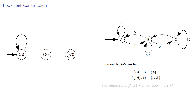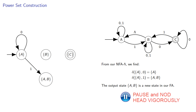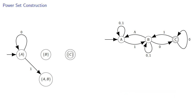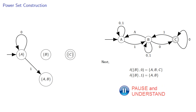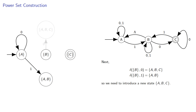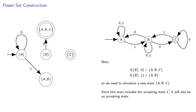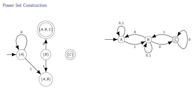Note that this output state {A, B} is a new state in our finite automaton. Let's see what happens from the other singletons. From {B} and a 0, we go to one state, and from {B} and a 1, we go to another. We have to introduce another new state consisting of {A, B, C}. Since this state includes the accepting state C, it will also be an accepting state.